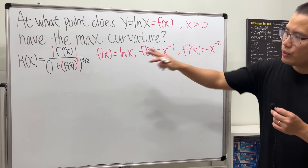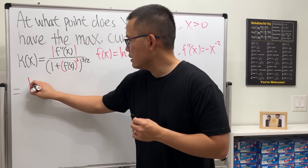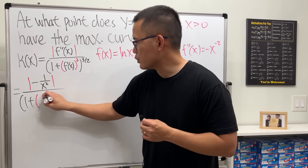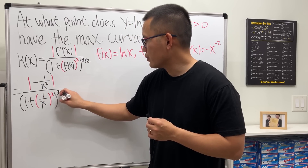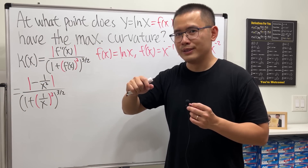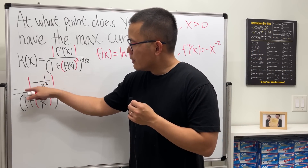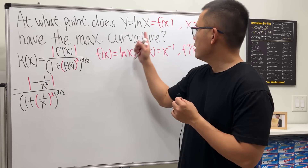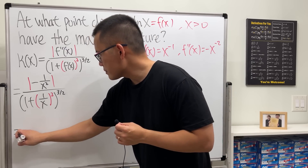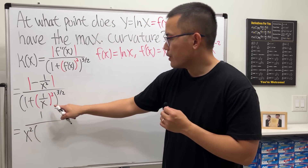Now put all this into the formula. The curvature kappa is the absolute value of negative 1/x² for the second derivative, over (1 + (1/x)²) raised to the 3/2 power. For the absolute value: the negative goes away and because x is positive, x² is never negative, so we just get 1/x². Let me put the x² below.